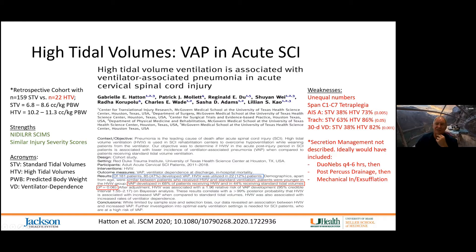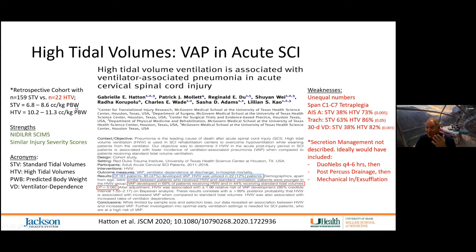There were a couple of flaws with this study. Standard tidal volumes (STV) in this study were between 7 and 9 cc/kg — well below the low tidal volumes trialed by Peterson. The 'high' tidal volumes were between 10 and 11 cc/kg — relatively low from our perspective. Of 181 individuals, 159 were in the standard tidal volume group and only 22 in the high tidal volume group. This was not a randomized study but a convenience study, making comparisons problematic.